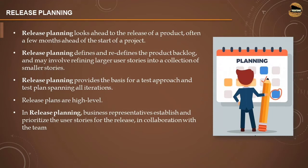Just remember the agile manifesto where we discussed about the same. In release planning, the business representatives establish and prioritize the user stories for the release in collaboration with the team — including the scrum master and everyone — to prioritize and understand the user stories in order to be executed and completed from time to time.